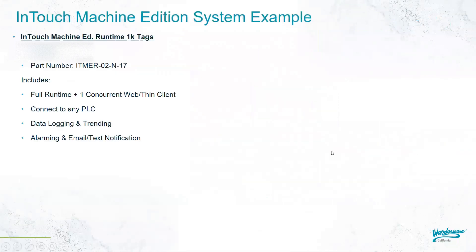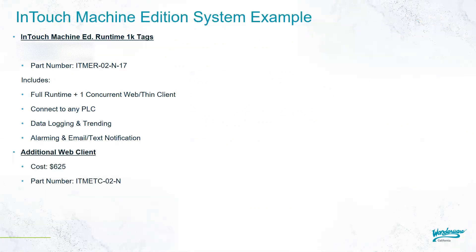InTouch Machine Edition doesn't require a capital project to get started. A full runtime license with 1,000 tags also includes one web client and is a low one-time cost of $2,005. This includes connectivity to all of your PLCs as well as built-in SQL logging, trending, and alarming. At any time, add another client for a one-time cost of $625. And if needed, add a development license for a low one-time cost of $1,085.